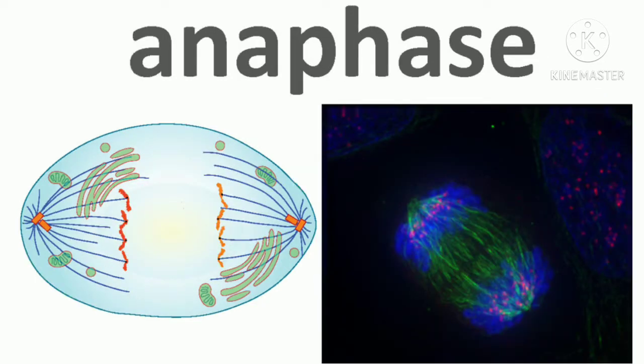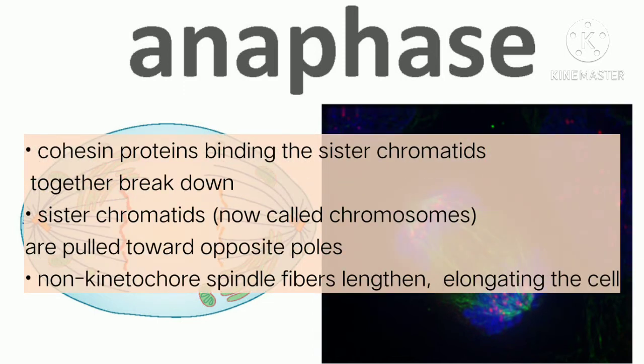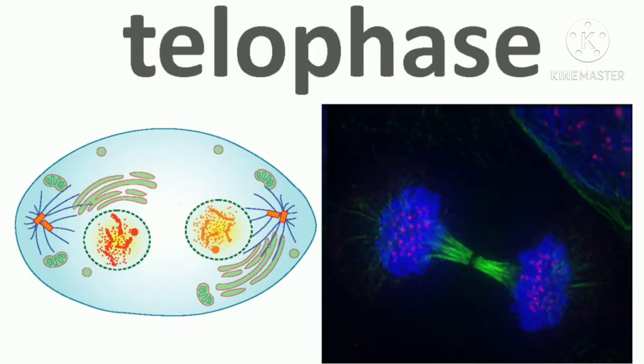During anaphase, the cohesin proteins degrade and the sister chromatids separate at the centromere. Each chromatid, now called a chromosome, is pulled rapidly toward the centrosome to which its microtubule is attached. The cell becomes visibly elongated or oval-shaped as the polar microtubules slide against each other at the metaphase plate where they overlap.